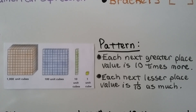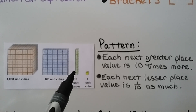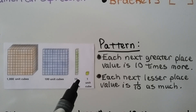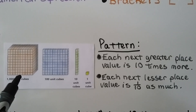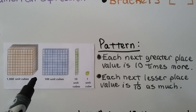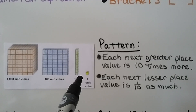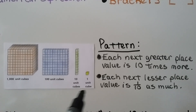A key pattern: each next greater place value is 10 times more. So 10 is 10 times more than 1, 100 is 10 times more than 10, and 1,000 is 10 times more than 100. And each next lesser place value is one-tenth as much: 100 is one-tenth of 1,000, 10 is one-tenth of 100, and 1 is one-tenth of 10.